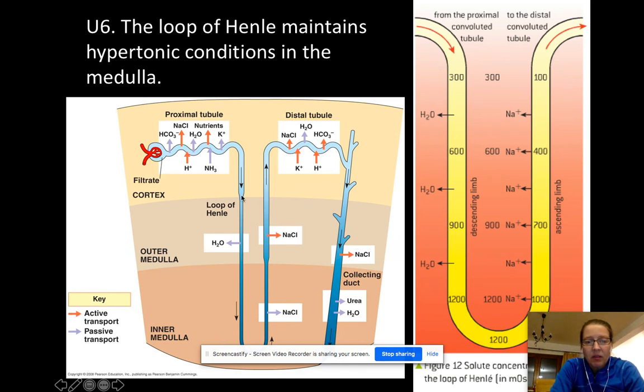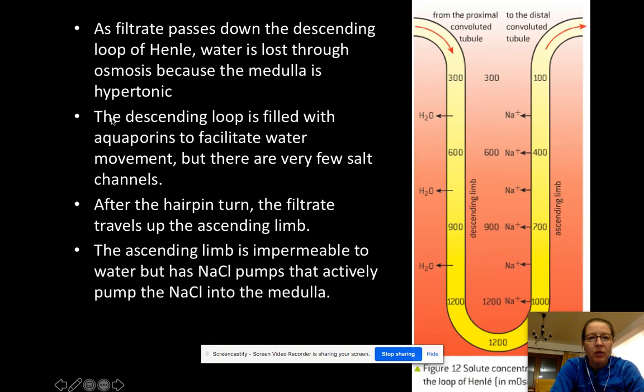And this is called the descending limb. And then there's a hairpin turn and the ascending limb. The descending limb, as filtrate passes down this descending limb, the water is lost through osmosis because the medulla is going to be really hypertonic to the water. So you can see the medulla at this place is 600 and the water between here and here, the 300 to 600 is going to keep losing through osmosis until it's the same concentration as the medulla. So you can see all along the way water gets lost. And that happens because there are a whole bunch of aquaporins. Those are the little protein channels that allow water to freely pass through. So we're encouraging osmosis here. There's actually very few salt channels. So salt can't really leave quite so easily. And that's why we're maintaining the salt balance because salt is staying in, but water is leaving.